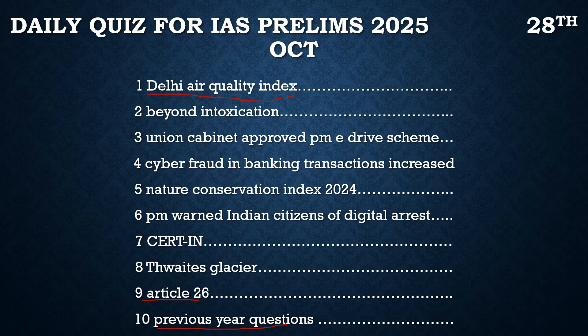The next article is about liquor regulation — going beyond just intoxication. Under the Seventh Schedule of the Indian Constitution, different items are assigned to the Centre, States, or both under the Concurrent List. Liquor, under the Seventh Schedule, is clearly given to the State List, making it a major source of income for states. There are two types of liquor: one used for industrial purposes and another for consumption by people.